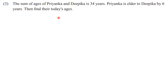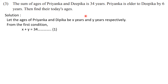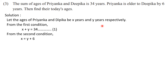Here there are two conditions. After reading the problem we understand there are two girls — Priyanka and Deepika — and we have to find their ages. So we assign x and y to their present ages. Let the ages of Priyanka and Deepika be x years and y years respectively. From the first condition, sum of ages: x + y = 34. From the second condition, Priyanka is older by 6 years, so x − y = 6.